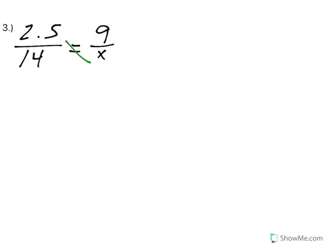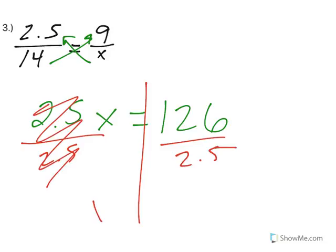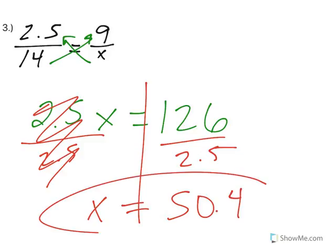Decimals get played with the same way, so 2.5x equals 126. I'm going to divide both sides by the number in front of the x so that it cancels out, and I'm simply left with 50.4.